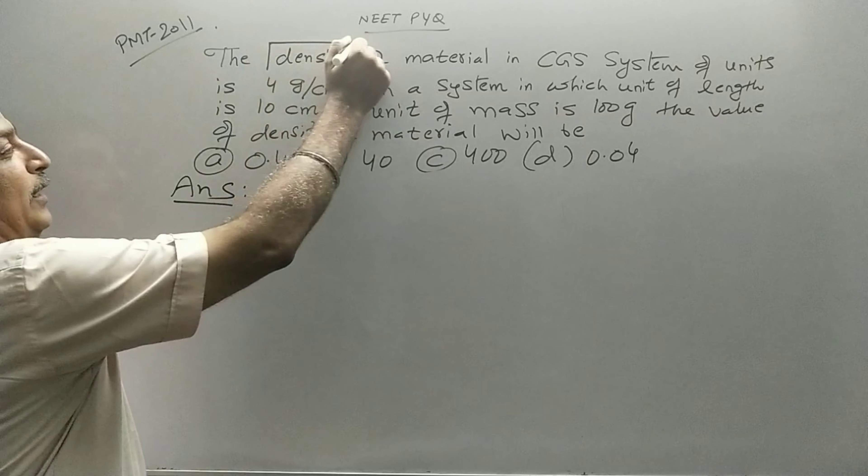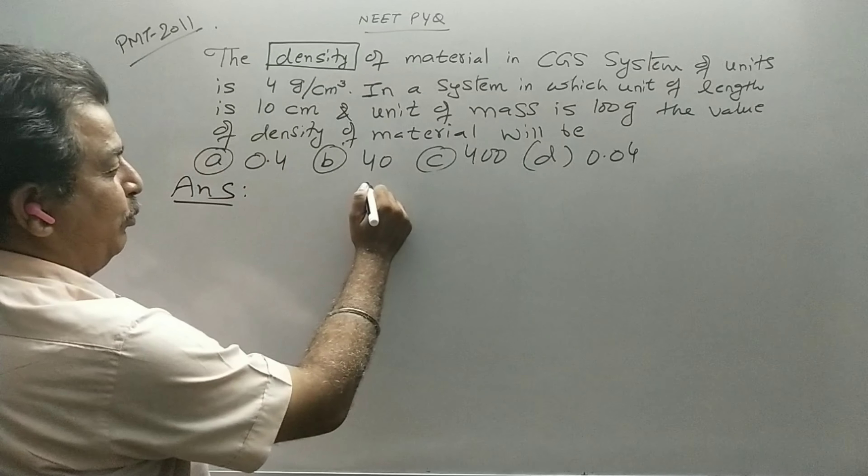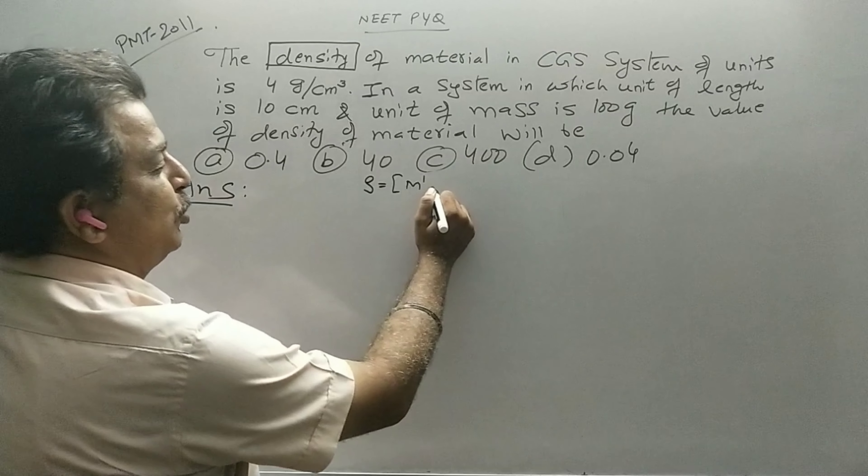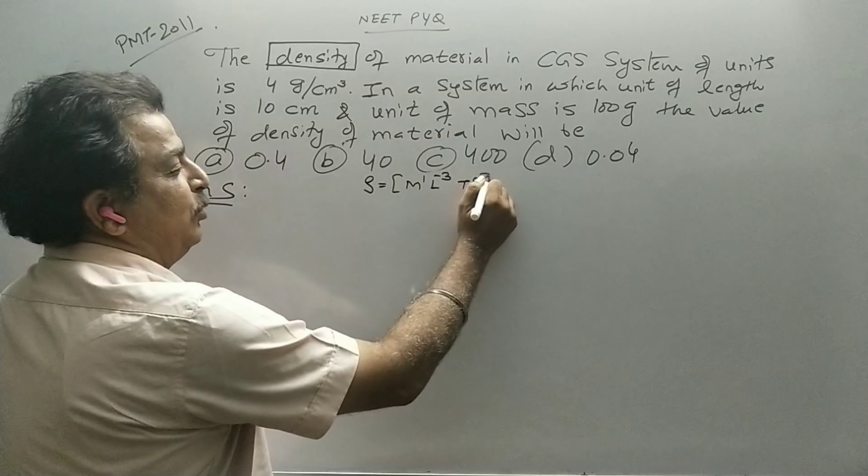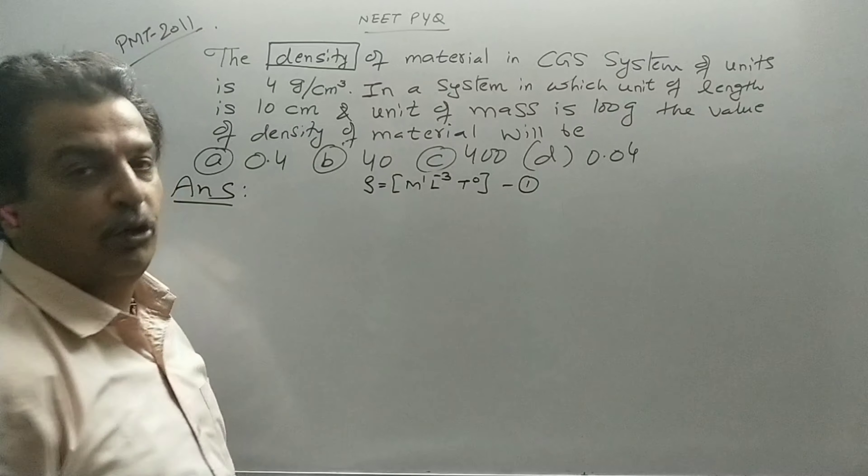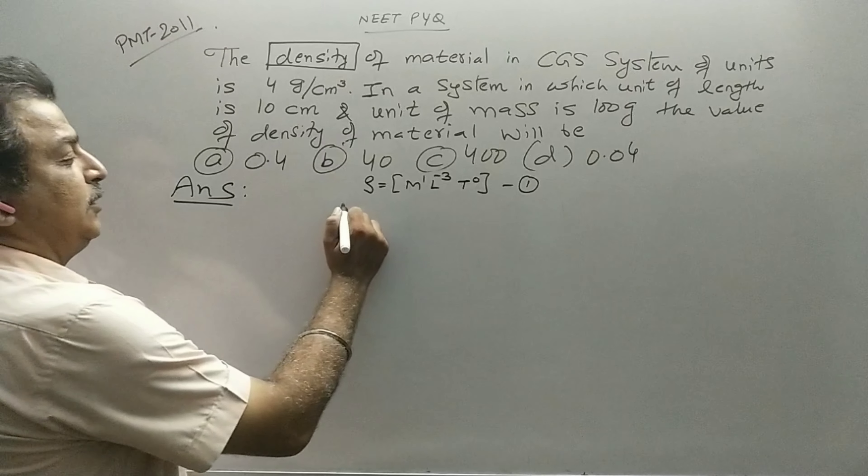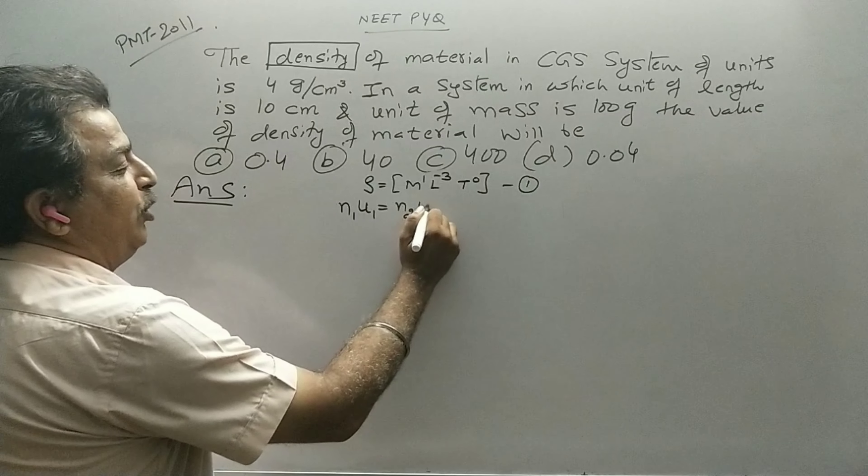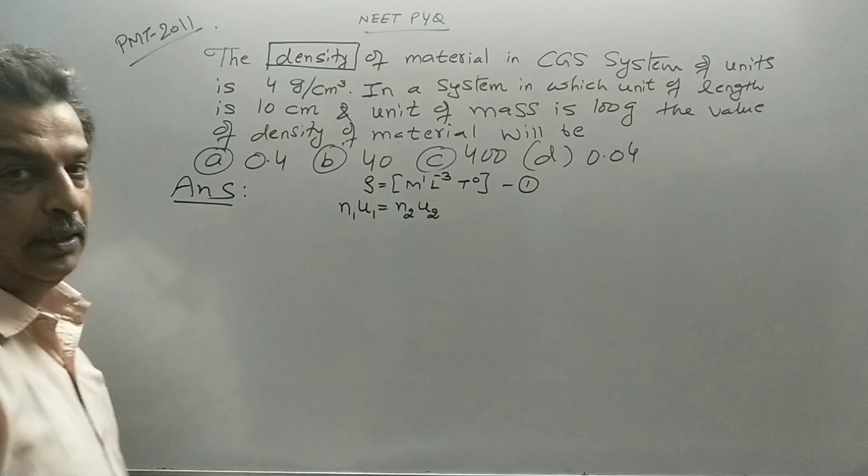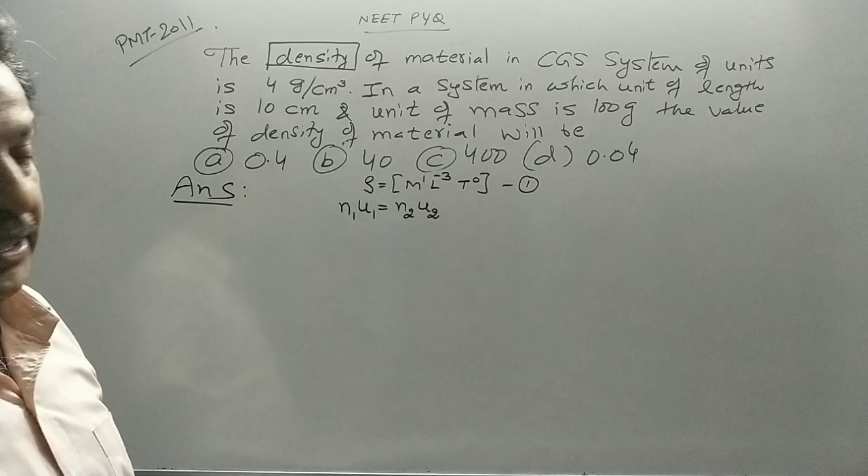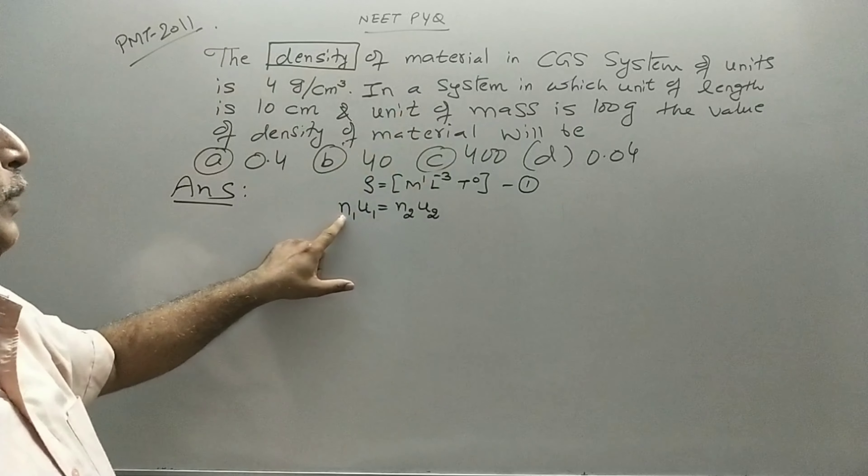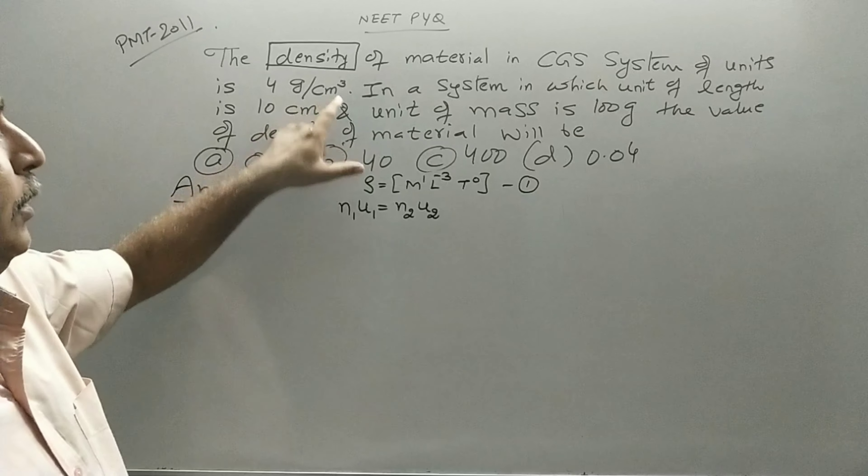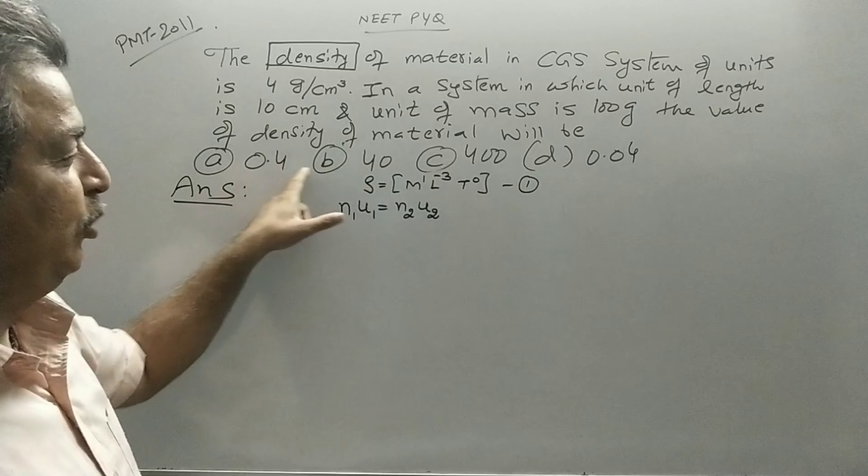The first step is the dimensional formula. So density, density's dimensional formula is mass upon volume, so M1, L-3, T0. Let's put the dimensional formula. Now the general formula is N1U1 is equal to N2U2. N1, N2 are numerical values. N1 in given system CGS is numerical value 4, U1 is gram per centimeter cube. N2 we have a new numerical value.